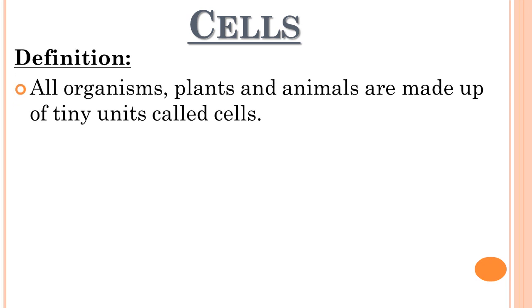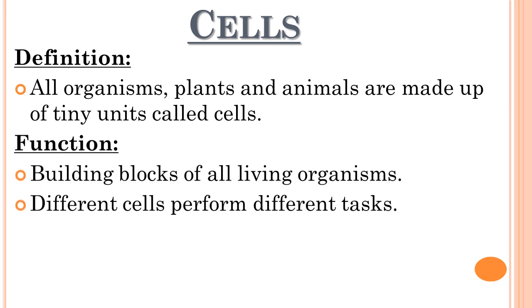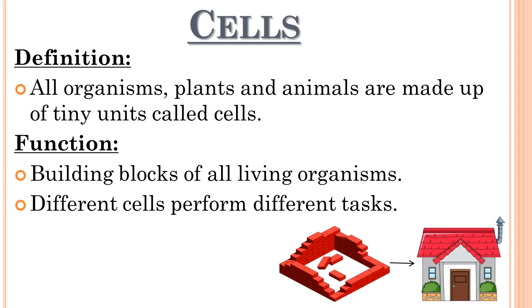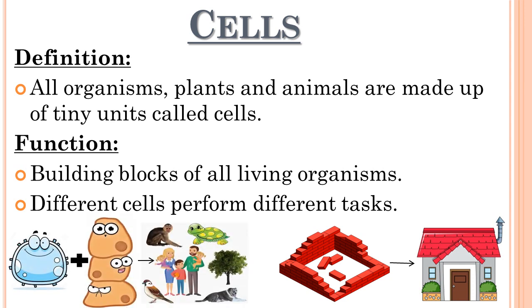Now we will discuss about cells. All organisms — plants and animals — are made up of tiny units called cells. Cells are very small units that you cannot see with your naked eye. They are the building blocks of all living organisms. Cells basically act like bricks to build up the entire organism. A large number of bricks join to form a building; similarly, the same and different cells combine together to form the body of a living organism. Different cells perform different tasks, although they have multiple features in common.